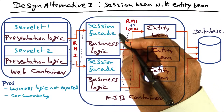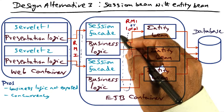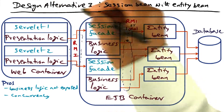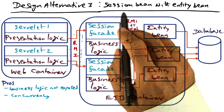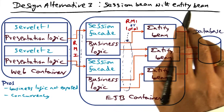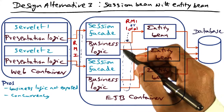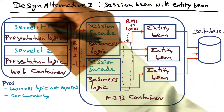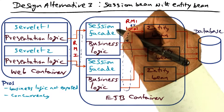The second design alternative gave concurrency, but at the cost of exposing the business logic. The third design alternative I'm going to explain is going to correct that. It is using session bean with entity bean. The idea is that we're going to associate with each client session a session facade.